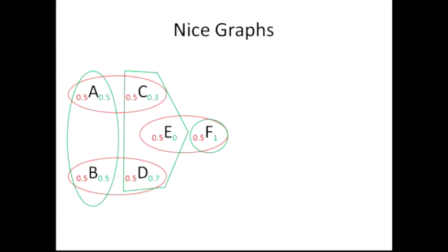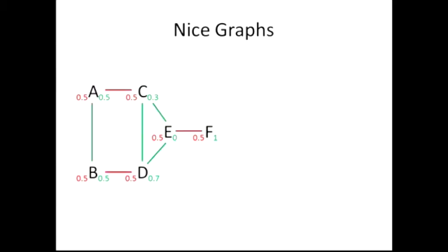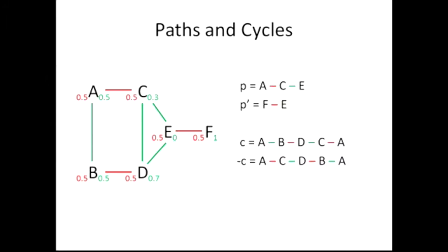Now let's clean this up. Getting rid of extraneous lines and drawing lines between states that are part of the same partition in the appropriate color gives us a nice little graph. We can build this as a formal graph. With this graph we can do nice graph-theoretic things: talk about paths and cycles. A path goes from A along the red line to C, then along the green line to E. A cycle goes from A down to B, B across to D, D up to C, C back to A — a closed path. Minus C is the cycle in the reverse direction.